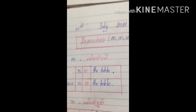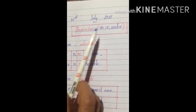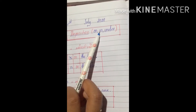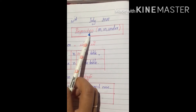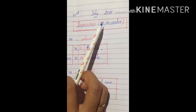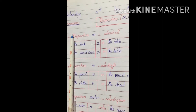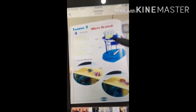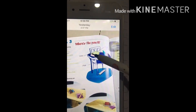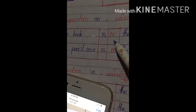Today you're going to learn grammar: prepositions — on, in, under. We call these prepositions of place, but I'll just write preposition on, in, and under. Let's go to the first one: preposition 'on'. Like the book here is on the desk. I have a sentence from this picture: the book is on the table.